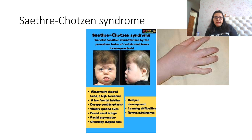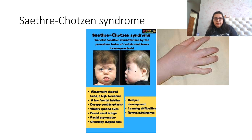This is Saethre-Chotzen syndrome. The child has a high degree of craniosynostosis, a low frontal hairline, droopy eyelids (ptosis), widely spaced eyes, a broad nasal bridge, facial asymmetry, and unusually shaped ears. These patients have global developmental delay with vastly delayed motor milestones and learning difficulties, though in some cases intellectual level can be normal.